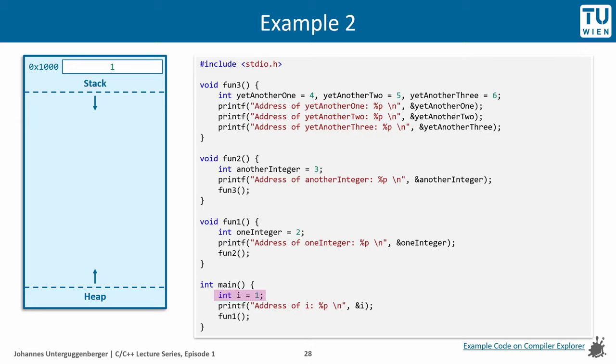First, in the main function, one integer variable is put on the stack. We move on to calling the function fun1. Within fun1, additional data gets put on the stack. Namely, another integer.